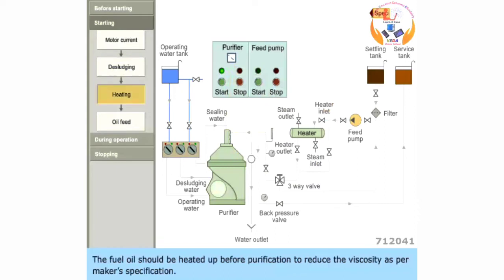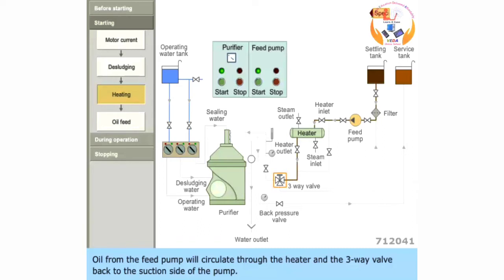The fuel oil should be heated up before purification to reduce the viscosity as per maker's specification. Start the feed pump. Oil from the feed pump will circulate through the heater and the three-way valve back to the suction side of the pump.